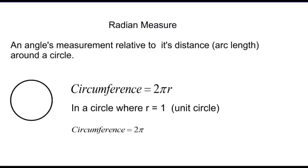Now, usually, we're used to measuring angles in what we call degree form. Today, we're going to talk a little bit about something called a radian measure. And what a radian measure is, is it refers to an angle's measurement relative to its distance or arc length around a circle. So, rather than an opening that we're used to here in terms of degrees, we're talking about a part of an arc length. So, this outside part of that circle.